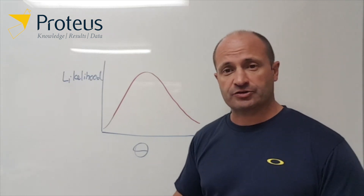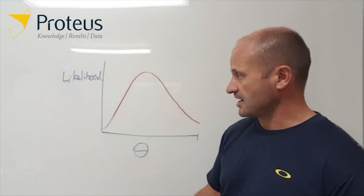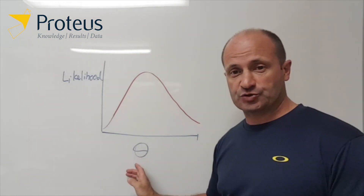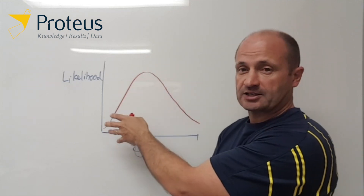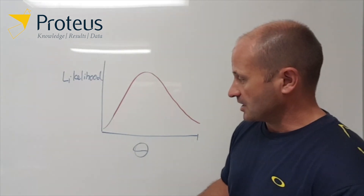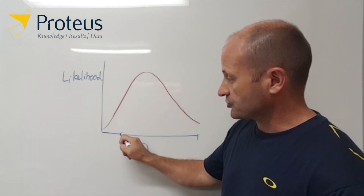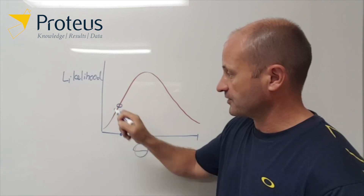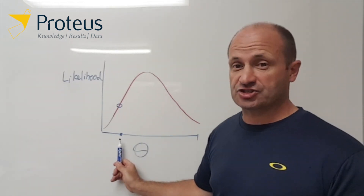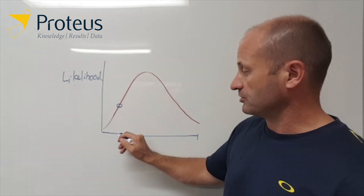With this one-parameter example, what we're trying to do when we analyze data is the software has the likelihood calculation built in. It starts with an initial value for theta because it doesn't know what the function looks like — it just knows how to calculate it for different single values of the parameter. So the software starts with some initial value for theta and calculates the value of the likelihood function at that point.